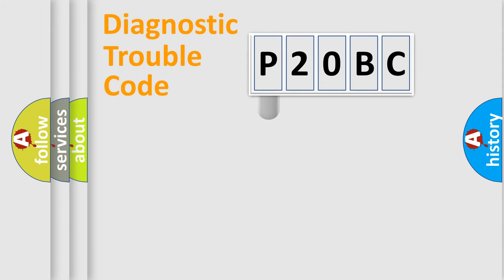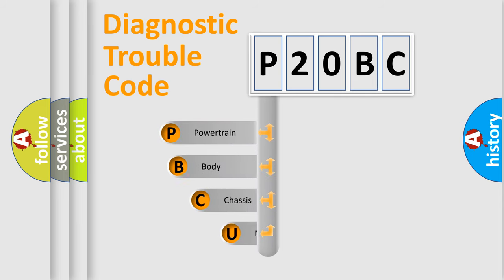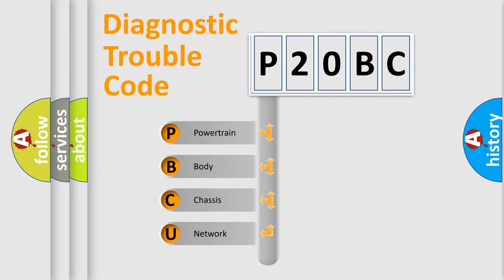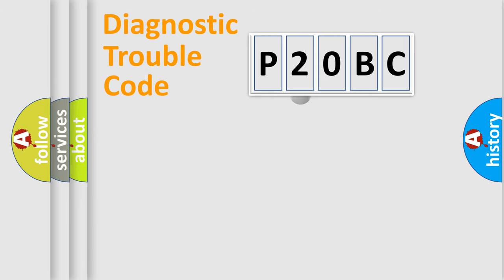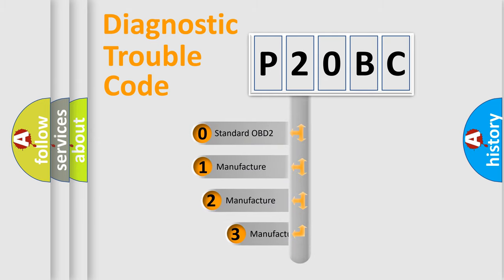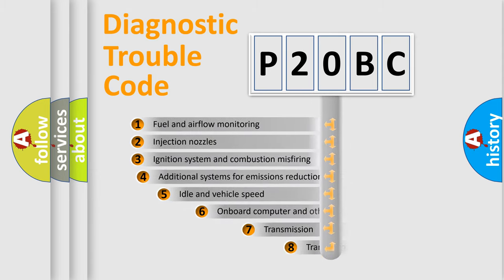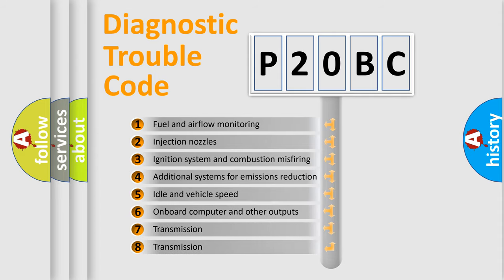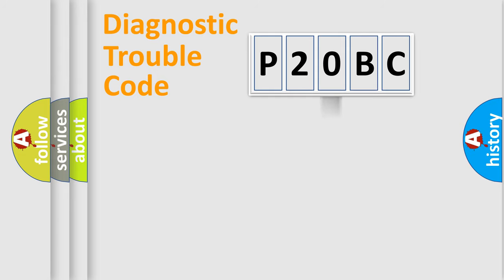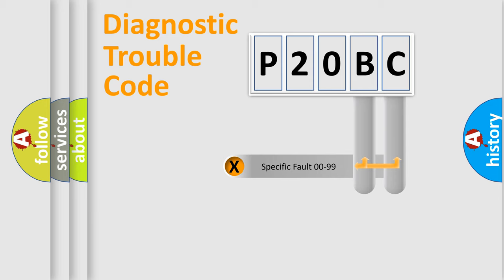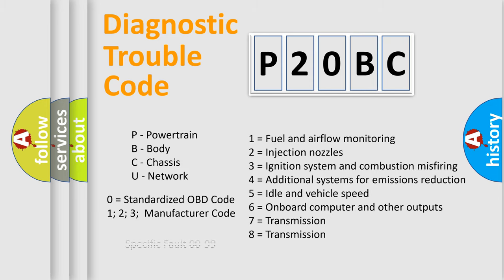Let's look at the history of diagnostic fault code composition according to the OBD2 protocol, which is unified for all automakers since 2000. We divide the electric system of an automobile into four basic units: Powertrain, Body, Chassis, and Network. This distribution is defined in the first character of the code. If the second character is zero, it is a standardized error. For numbers 1, 2, or 3, it is a more manufacturer-specific error. The third character specifies a subset of errors. Only the last two characters define the specific fault of the group, and this division is valid only when the second character is zero.